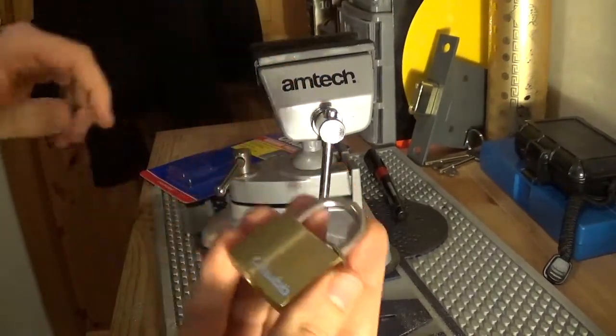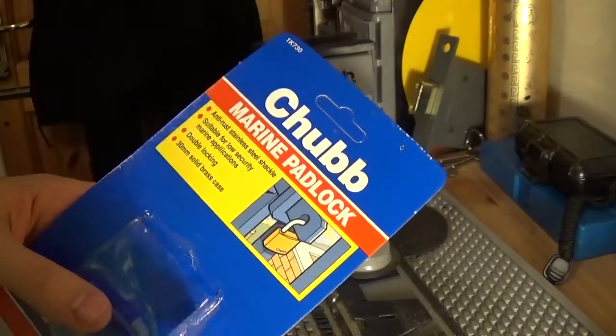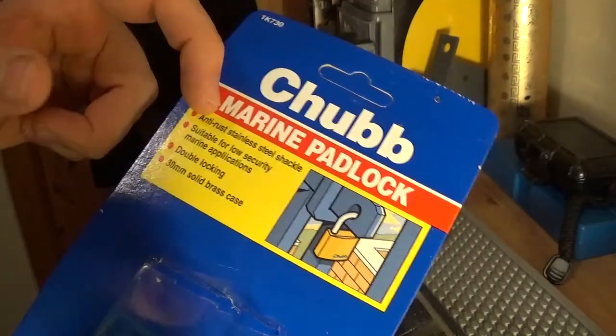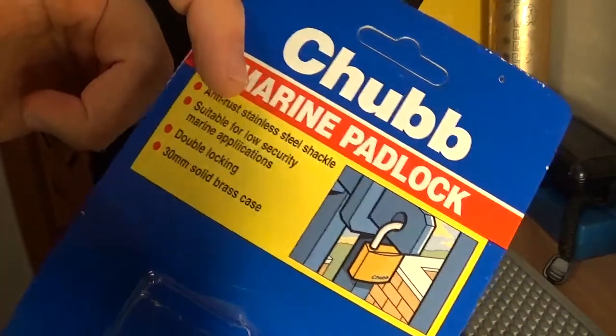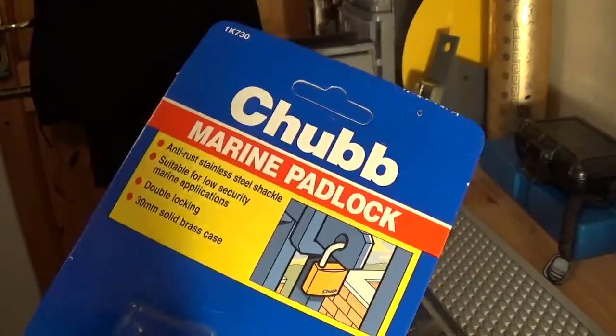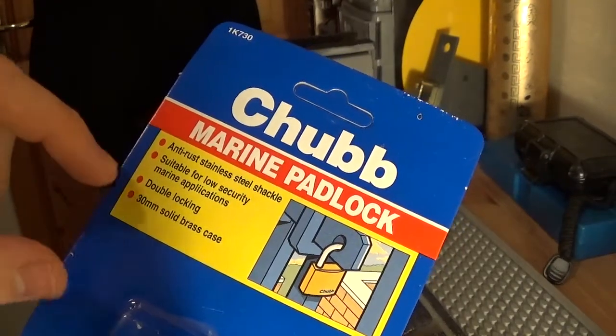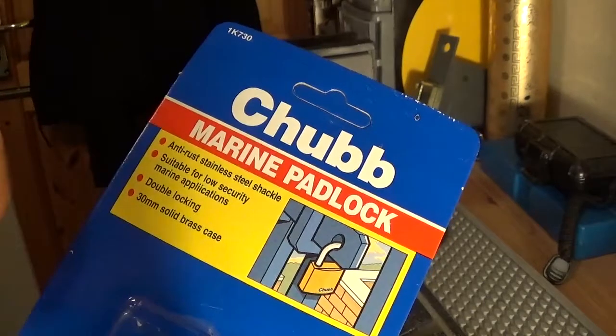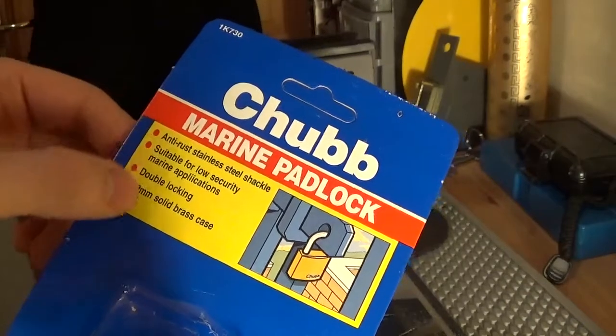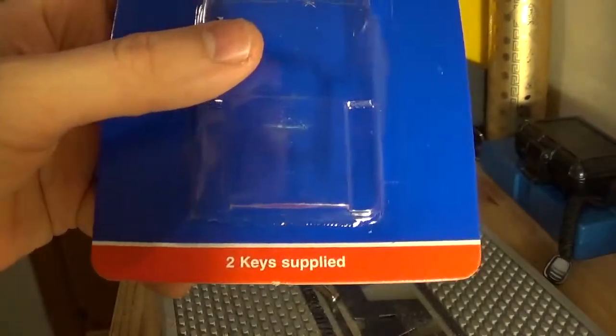Anyway, so here's the lock today. It's a brand new old stock padlock. Just says anti-rust stainless steel shackle, suitable for low security marine applications, which is good that they say that. It's double locking, that is true. It's a 30 millimeter solid brass case or body, and everything here that they've mentioned is correct. Two keys supplied, that's true.